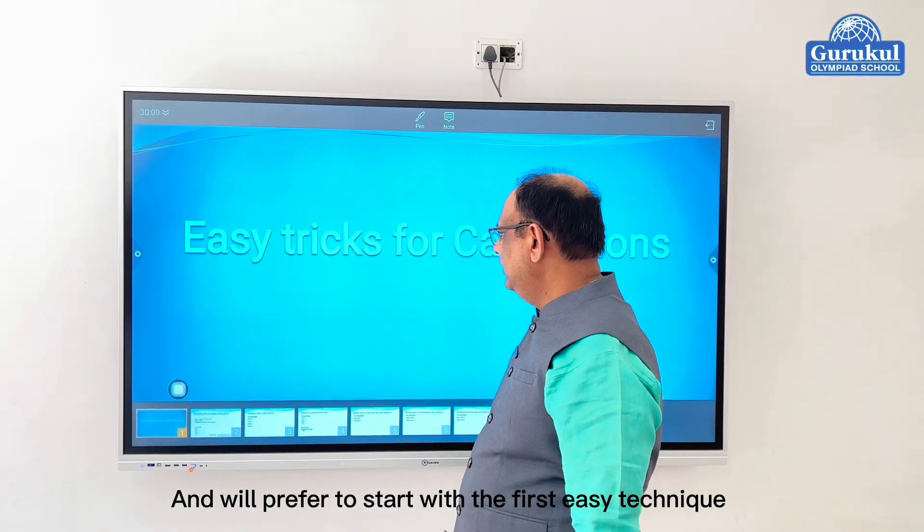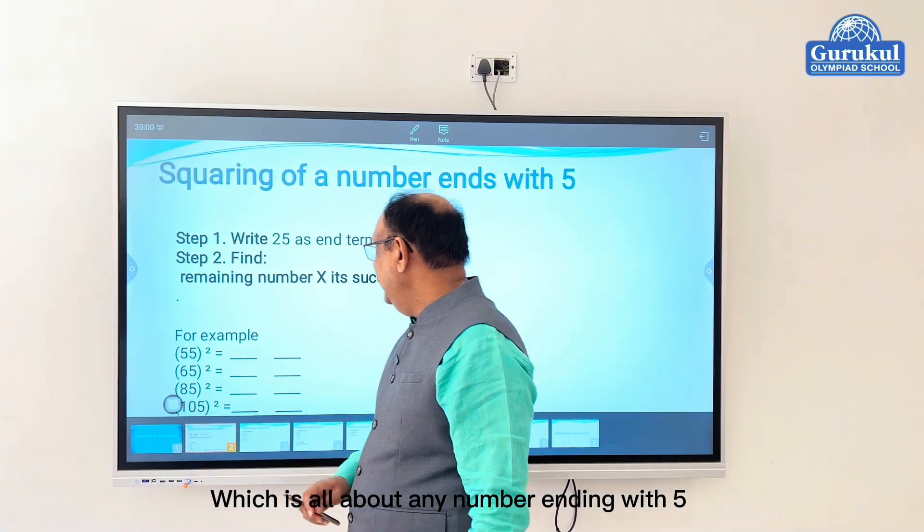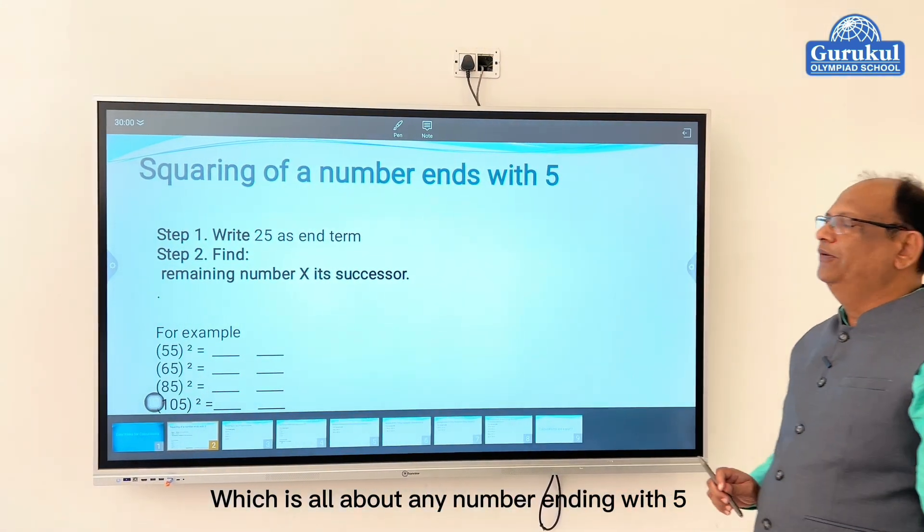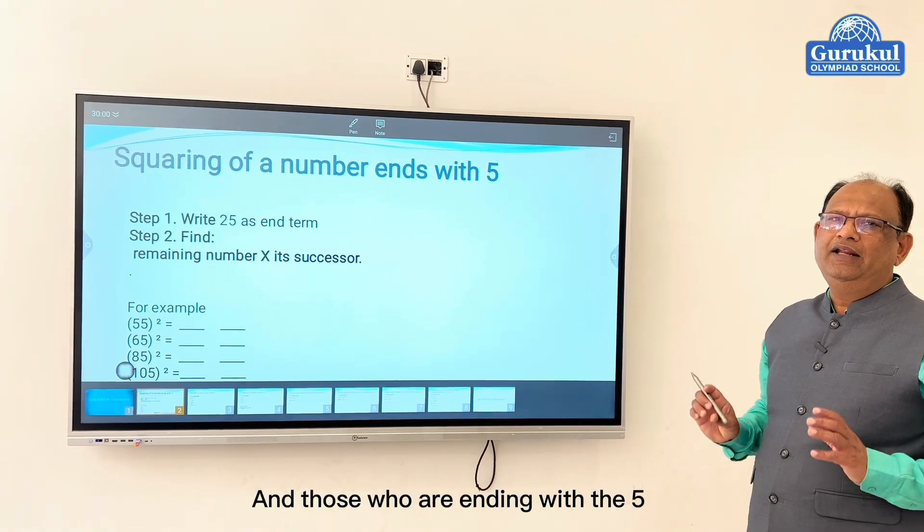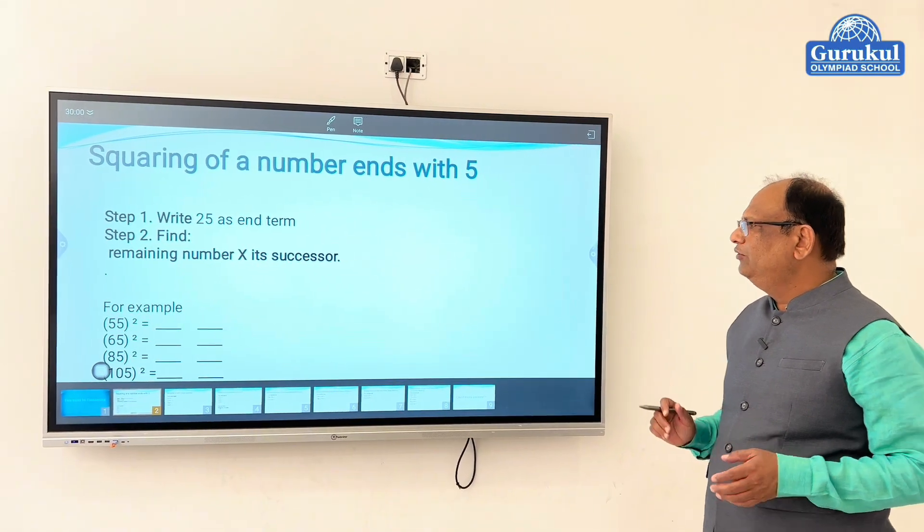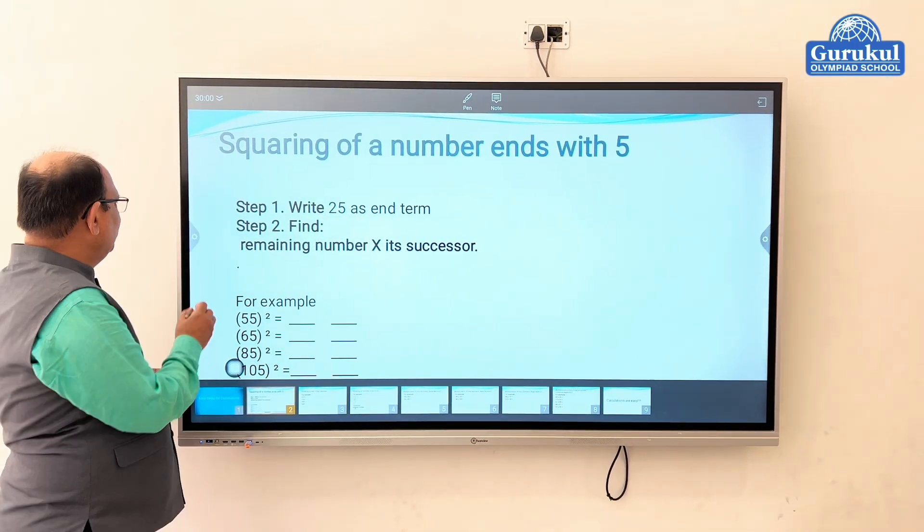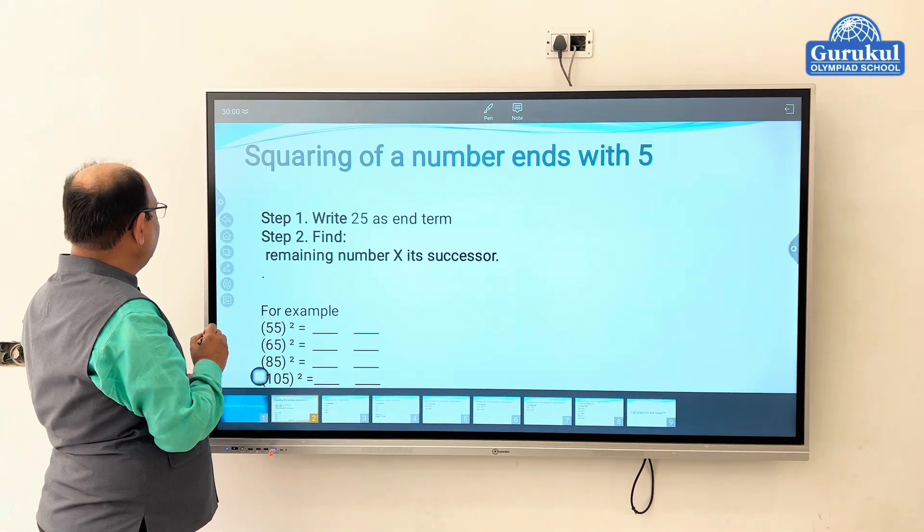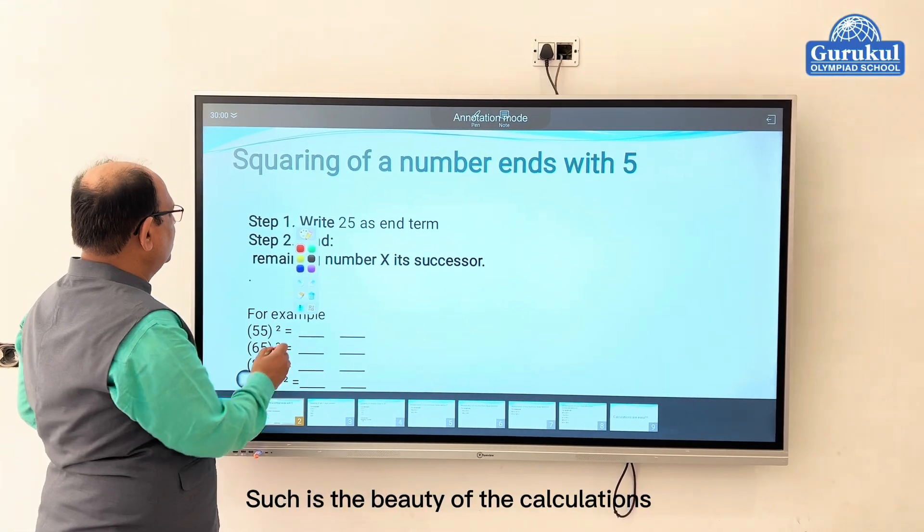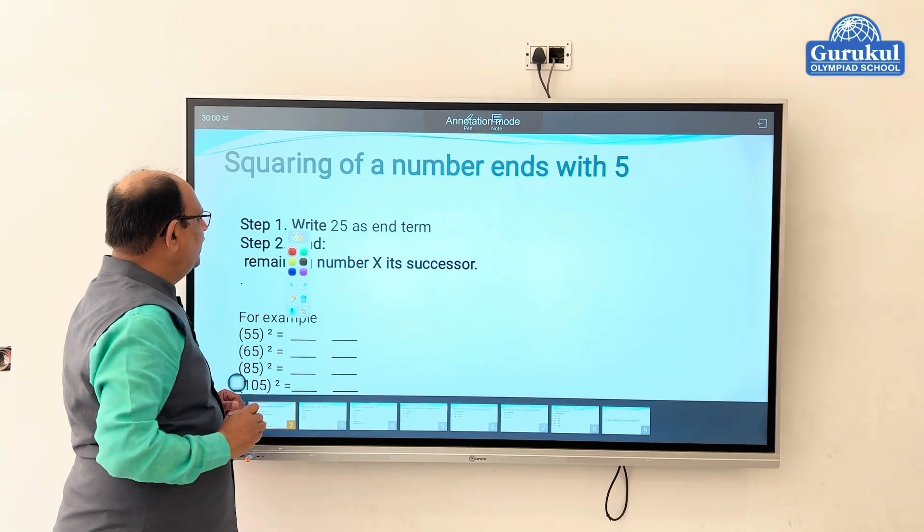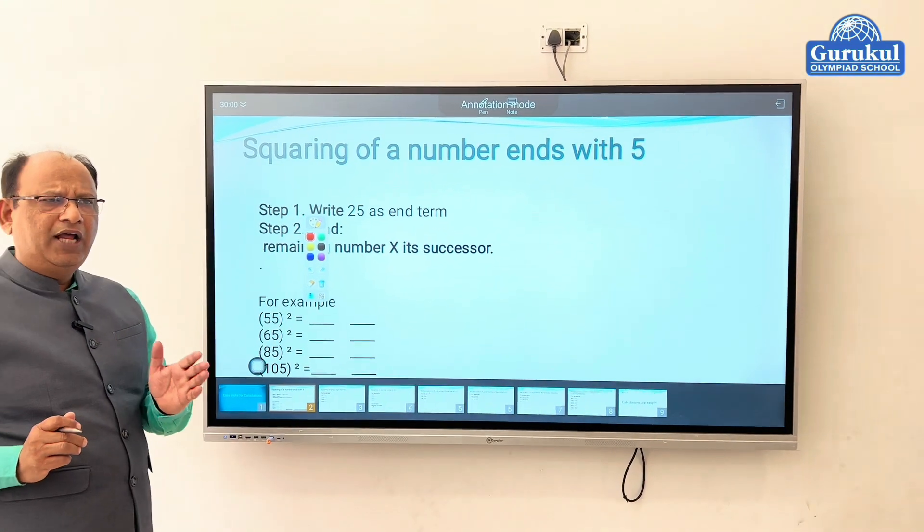We will start with the first easy technique, which is all about any number ending with five. I say there are numbers which we have to take out squares and those who are ending with five. Let's look into it.